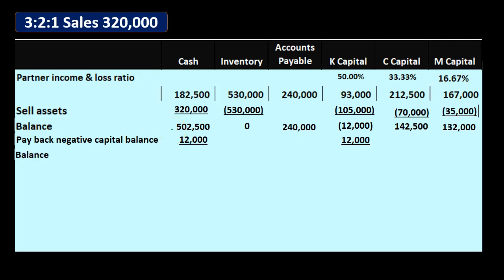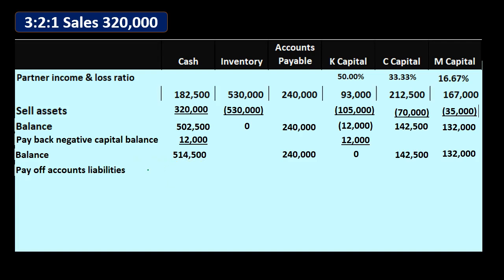Our new cash balance is $502,500 plus $12,000, bringing us to $514,500. Accounts payable remains at $240,000. K's capital is now zero, and C and M's capitals remain at $142,500 and $132,000. We then pay off the liability: accounts payable is on the books at $240,000, so we pay out $240,000 in cash, leaving a cash balance of $274,500 and accounts payable going to zero.